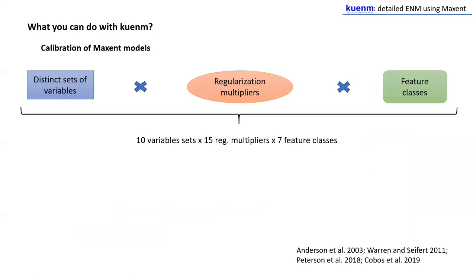Model calibration is one of the main things in KUNHM, and it basically consists in testing model performance of candidate models created with distinct parameter settings in Maxent — for example, feature classes and regularization multipliers. We were also interested in the effect of distinct sets of variables in those models, because we never know if the sets of variables we decided on were actually the best ones, though we always have a good set of candidates. So KUNHM also helps to see which of those candidate sets of variables will be better to produce our models.